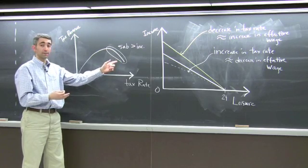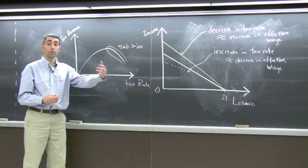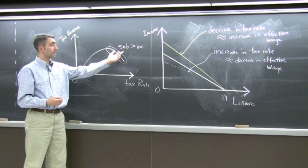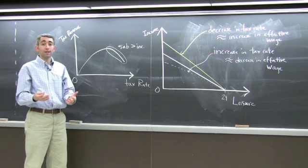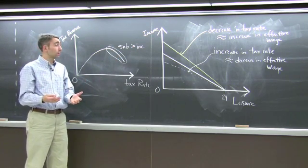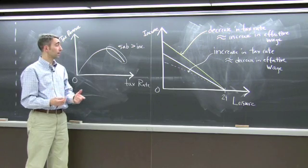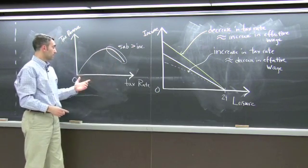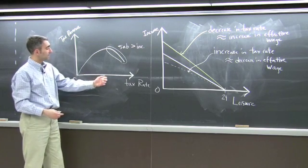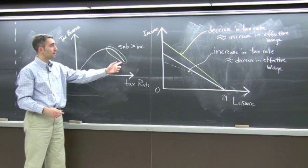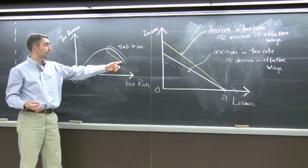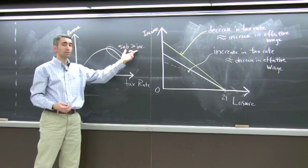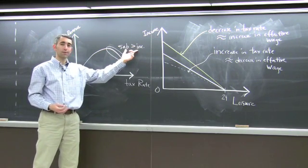Because remember, the income effect would say, I'm effectively poorer, I want to work more. The substitution effect says that the opportunity cost of leisure is really low, so I'm going to consume more leisure and work less. If you are on this part of the Laffer curve, where you increase the tax rate further and you see your revenue go down, you know from a labor supply perspective that you're at a point where the substitution effect of the tax increase is greater than the income effect.